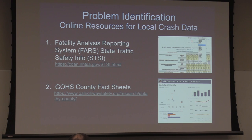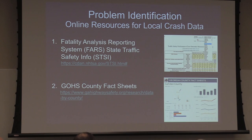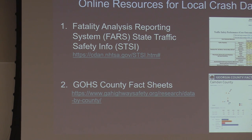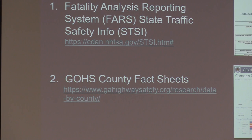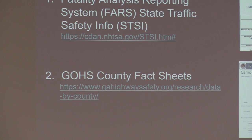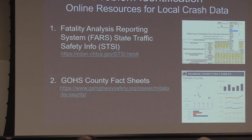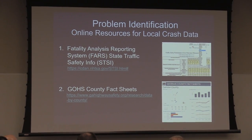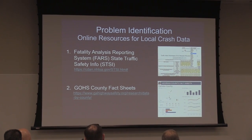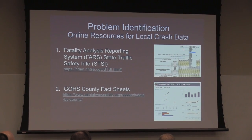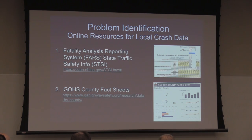Some good resources: FARS — the Fatal Analysis Reporting System — put out by NHTSA, is easy to get to and a wealth of information. The GOHS County fact sheet is online on our website and is a total breakdown of all 159 counties, broken down by speeding, crashes, injuries, fatalities, and DUIs, with a map plotting them. We use that data to decide where to conduct Thunder Task Force operations, ranking those counties.